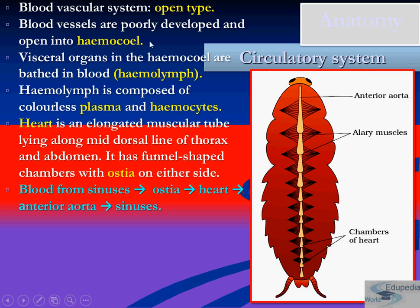The blood vascular system in cockroaches is of open type. Blood vessels are poorly developed and open into the hemocele. Visceral organs in the hemocele are bathed in blood. The blood of the cockroach is known as hemolymph, composed of colorless plasma and hemocytes. The heart is an elongated muscular tube lying along the mid-dorsal line of the thorax and abdomen, with funnel-shaped chambers with ostea on either side. Blood flows from the sinuses into the ostea, then to the heart, then to the anterior aorta, and back to the sinuses.